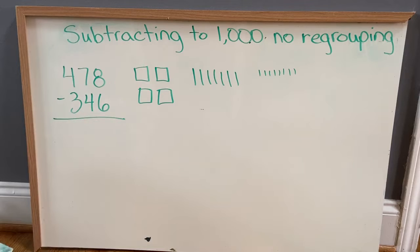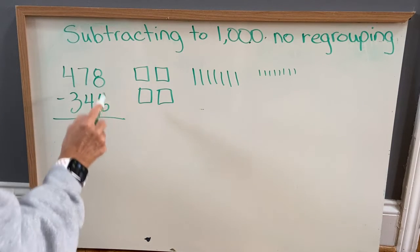Okay, we want to subtract 346. So let's start with the ones. We're taking six ones away from the eight.